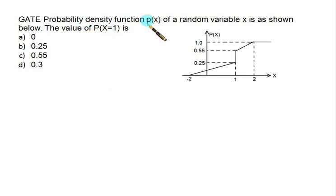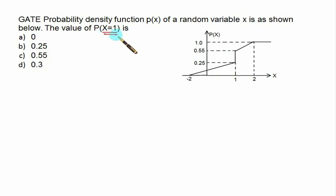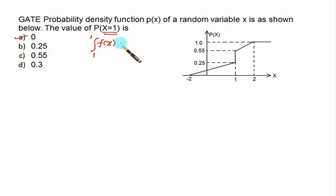A tricky type of question gives a continuous PDF and asks for the probability at exactly x = 1. For a continuous random variable, P(x = 1) cannot be nonzero — the integral from 1 to 1 of f(x) dx is always equal to 0. This is a commonly tested tricky concept.